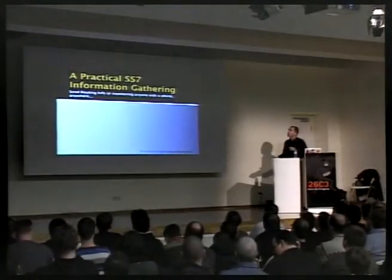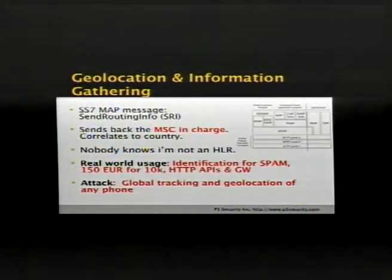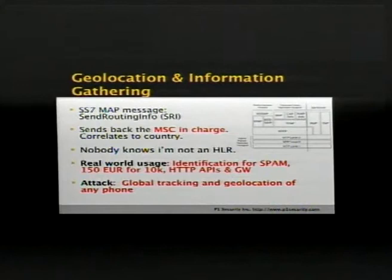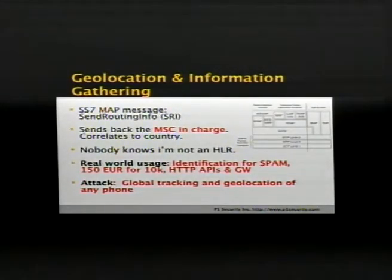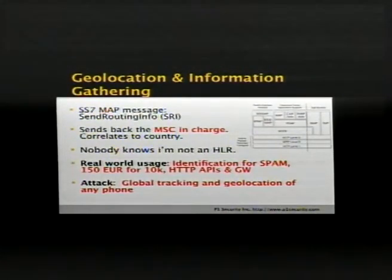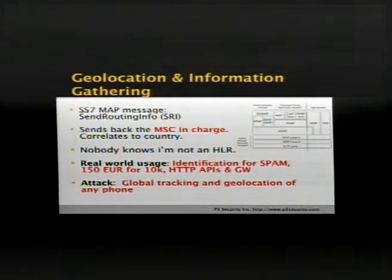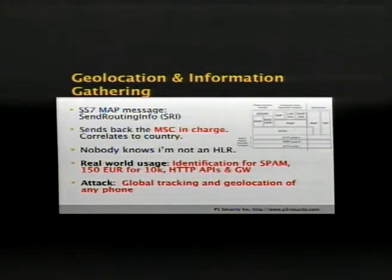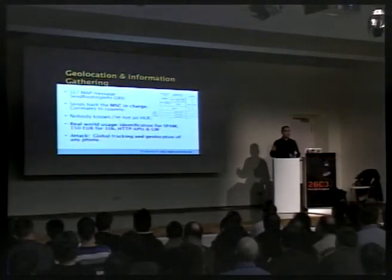One thing Tobias showed last year is the usage of SRI — Send Routing Info — messages to determine which country a subscriber is in by querying their roaming location via the MSC. The MSC is in charge of many phones, and must be contacted if someone wants to reach a roaming subscriber. From outside the network this costs around 150 euros for 10,000 lookups, but from inside the network it's essentially free — you can inject as many queries as you want and it will go undetected.